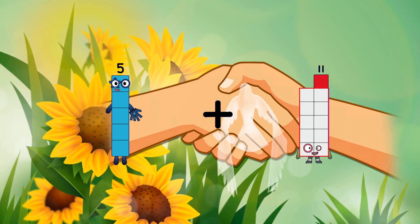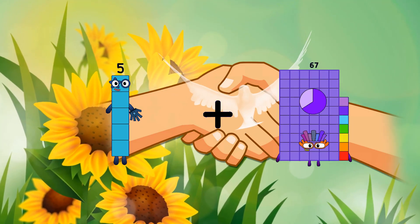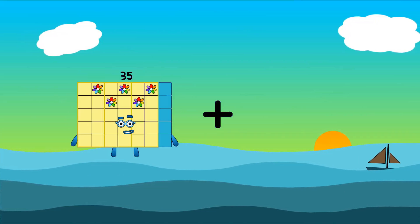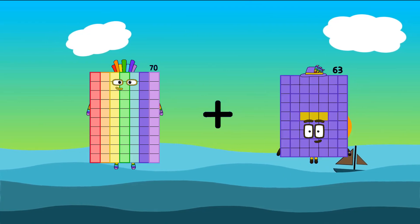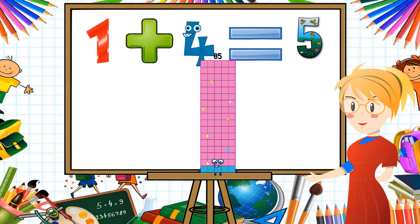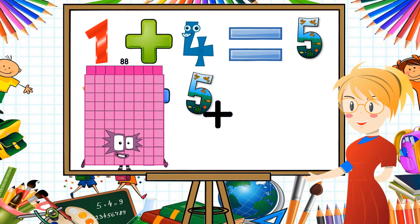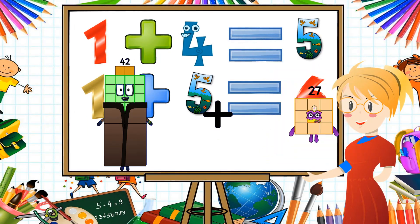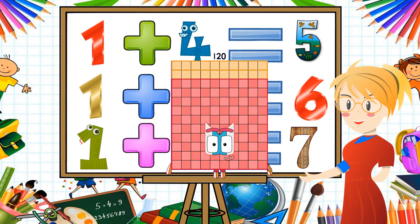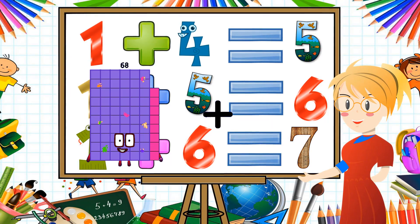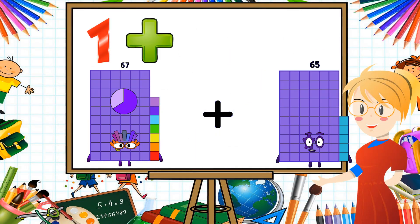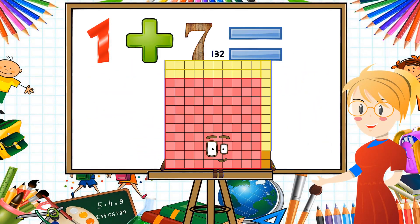5 plus 62 equals 72. 70 plus 15 equals 85. 42 plus 70 equals 120. 67 plus 65 equals 132.